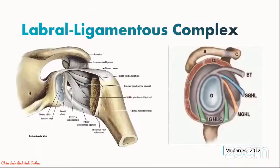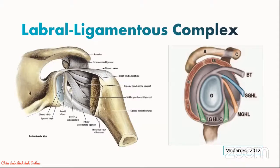If you zoom into the anatomy of the glenohumeral joint, you will notice that there are thickened bands of the joint capsule that form the superior, middle and inferior glenohumeral ligaments. These ligaments serve as a form of static stabilizers in varying degrees of shoulder internal-external rotation and adduction. In particular, the anterior band of the inferior glenohumeral ligament, which is attached to the anterior inferior glenoid labrum, serves as a primary restraint against anterior inferior dislocation at 90 degrees of abduction and external rotation.